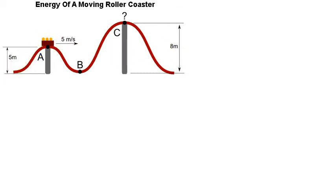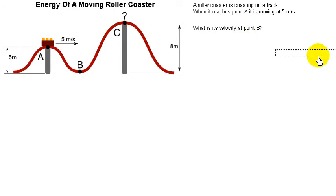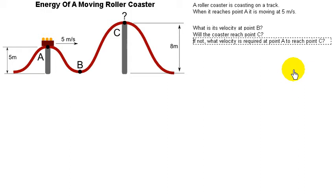Here's the problem. A roller coaster is coasting on a track. When it reaches point A, it is moving at five meters per second. What is the velocity at point B? Will the coaster reach point C? If not, what velocity is required at point A to reach point C?